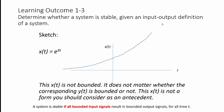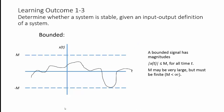Remember the definition: a system is stable if all bounded input signals result in bounded output signals for all time t. The antecedent — the 'if' part — fails, and therefore it's not something you consider. Think back to your truth tables, like in digital systems. We're going to go back to bounded signals.